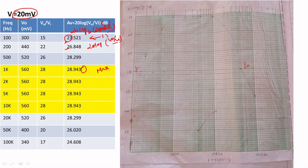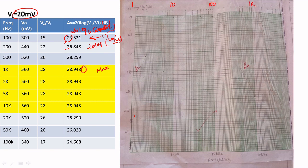Now I will show you how to plot on the semilog graph sheet. Here, I have taken 1 as 100 — that is based on the observed values. The values are observed from 100 to 100 kilohertz. I have taken the minimum as 100. Suppose you observed from 1, you can take 1, 10, 100, 1k, and 10k. The understanding is this is a multiple of those values.